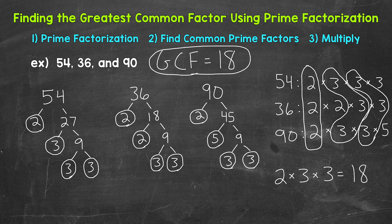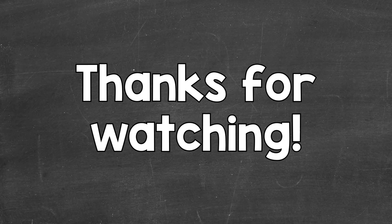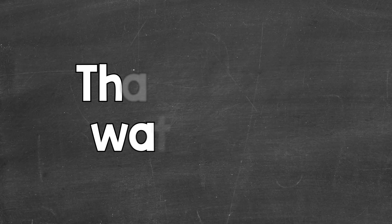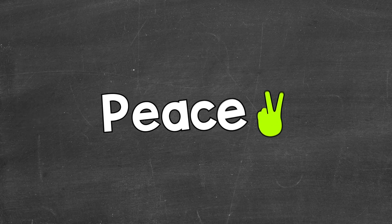So there you have it — that's how to find the greatest common factor of three numbers using prime factorization. I hope that helped. Thanks so much for watching. Until next time, peace.